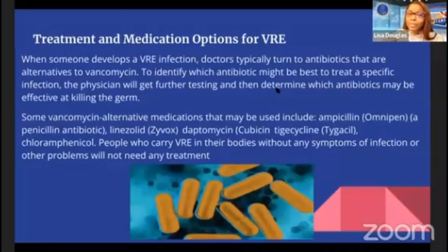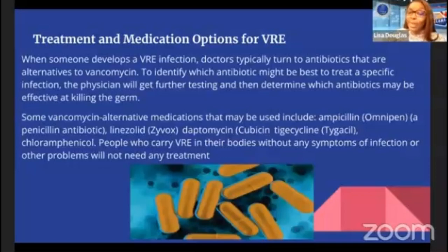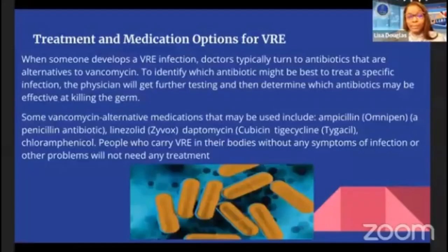When someone develops a VRE infection, doctors typically turn to antibiotics that are alternatives to vancomycin. To identify which antibiotic might be best, the physician will get further testing and determine which antibiotic may be effective at killing the germ. Some alternatives that may be used include ampicillin. People who carry VRE in their bodies without any symptoms will not need any treatment.